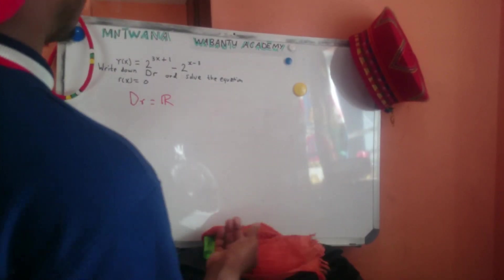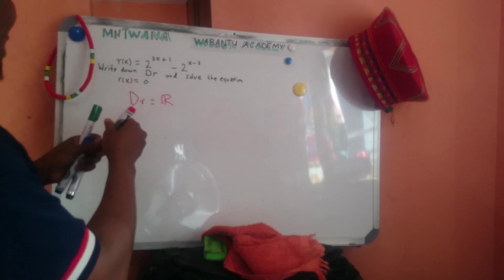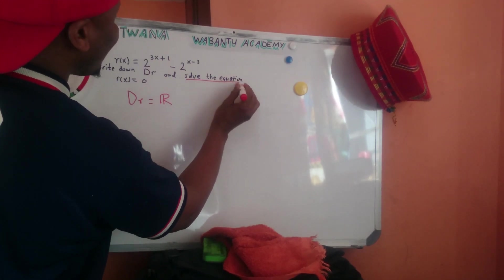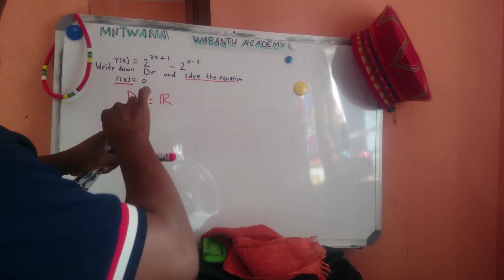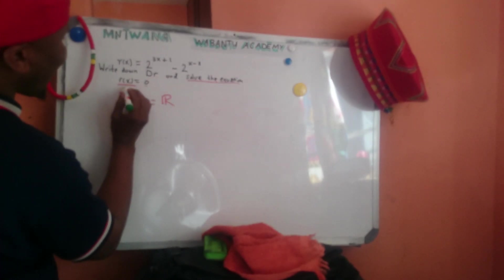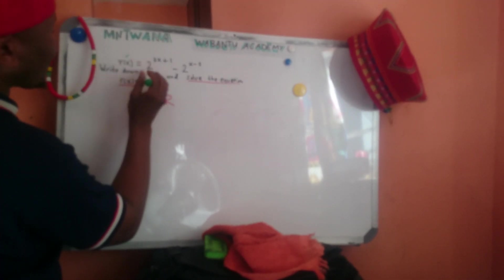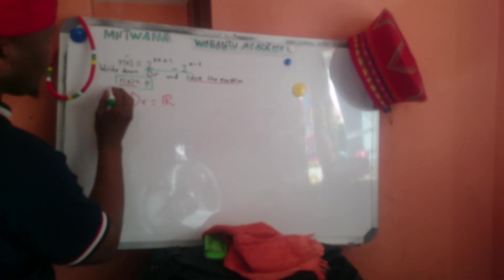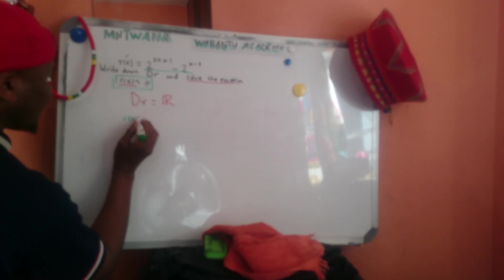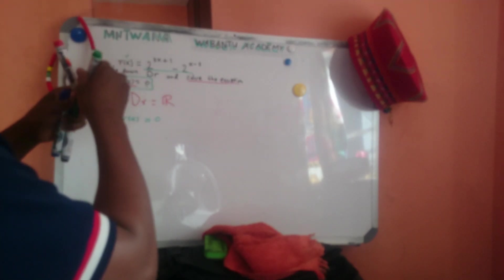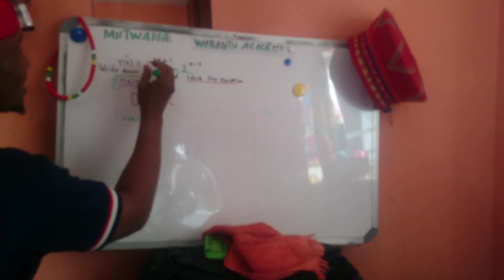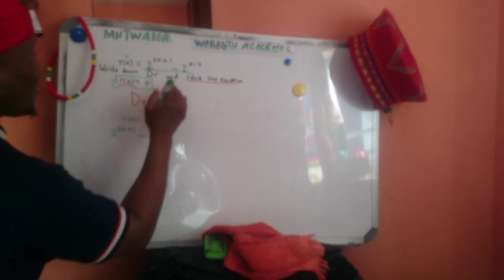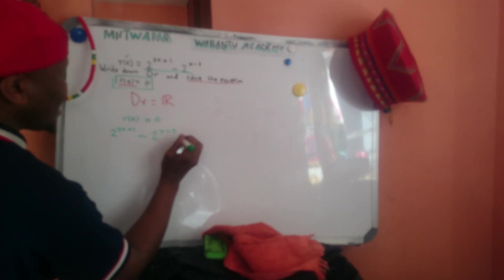Now let's go to the second part: solve the equation f(x) = 0. So f(x) = 0. We know what f(x) is — we plug it in. So f(x) = 0 means: 3x + 1 minus 2x minus 3x plus 1 equals 0.